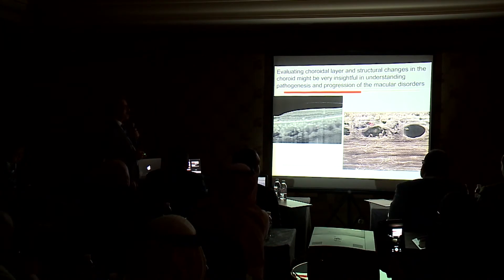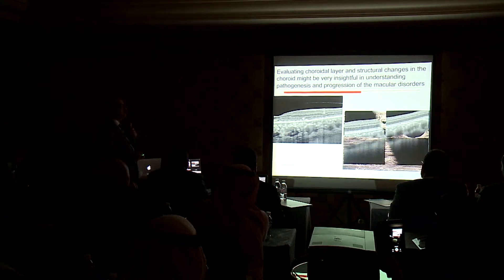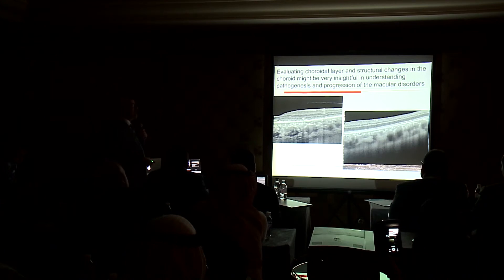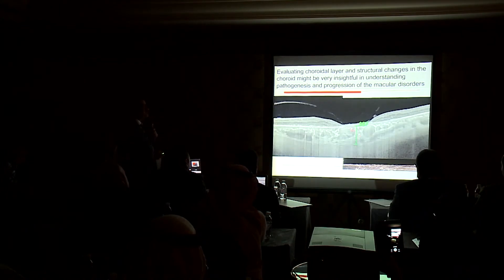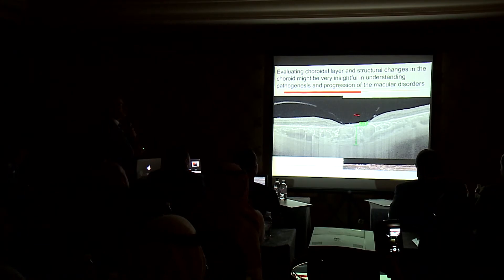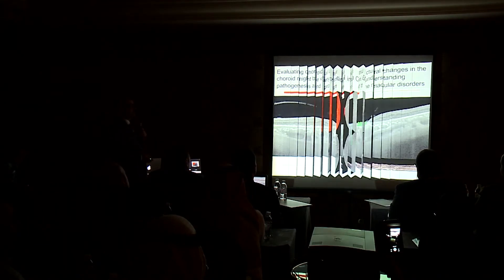We can see when the choroidal vessels are dilated, because now we have what we call pachychoroid pigment epitheliopathy due to choroidal pathology. We can see if the choroid is thickened despite what is overlying it — which is the dystrophy — and we all know there is choroidal thickening now associated with most retinal dystrophies.